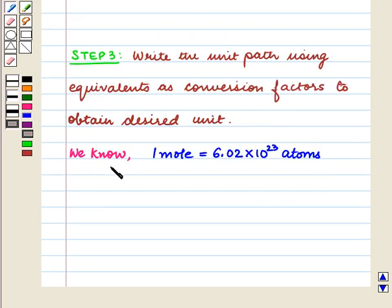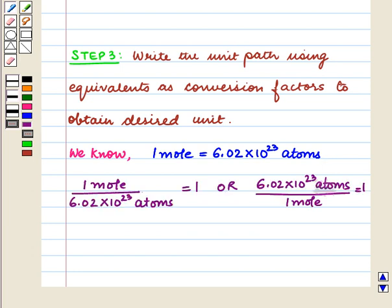Now we know 1 mole is equal to 6.02 × 10^23 atoms. So we have 1 mole upon 6.02 × 10^23 atoms is equal to 1.